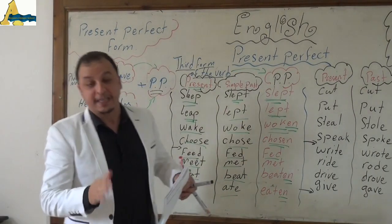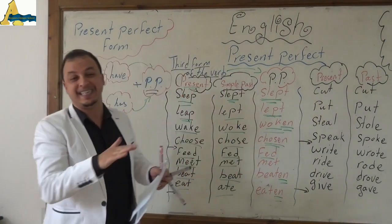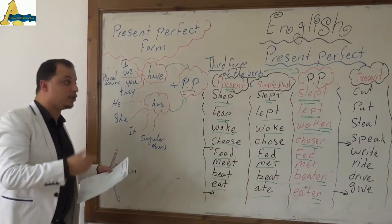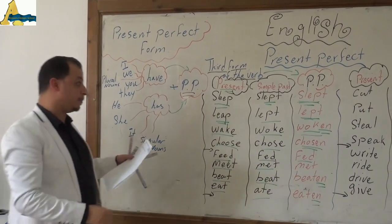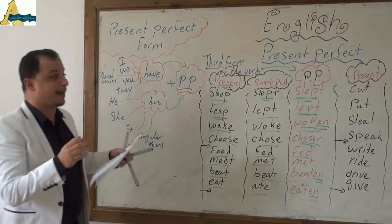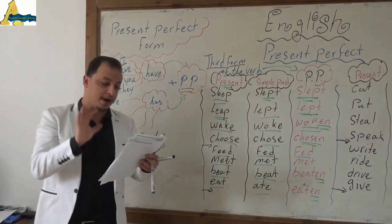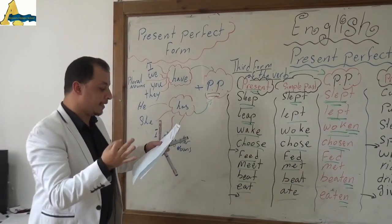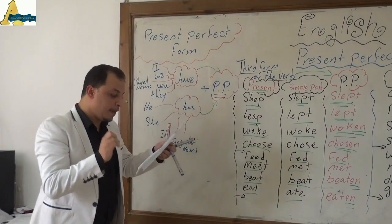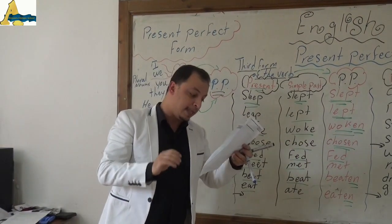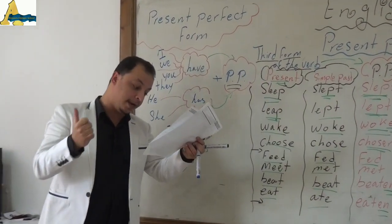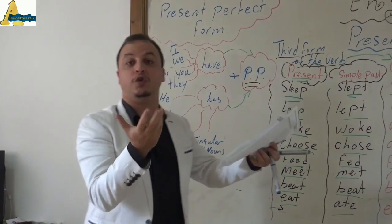I am not a usual teacher — I have to give you a song in order to memorize them. Let's start with this song: write, wrote, written. Drive, drove, driven. Give, gave, given. Creep, crept, crept. Sleep, slept, slept. Get, got, gotten. Forget, forgot, forgotten. Do, did, done. Begin, began, begun. Take, took, taken. Shake, shook, shaken.